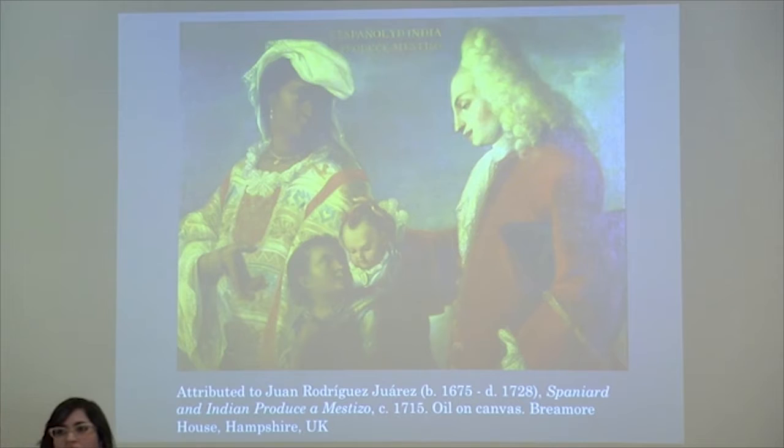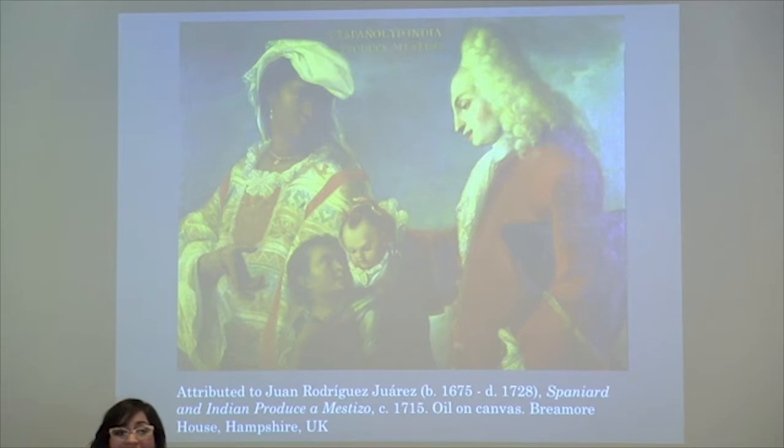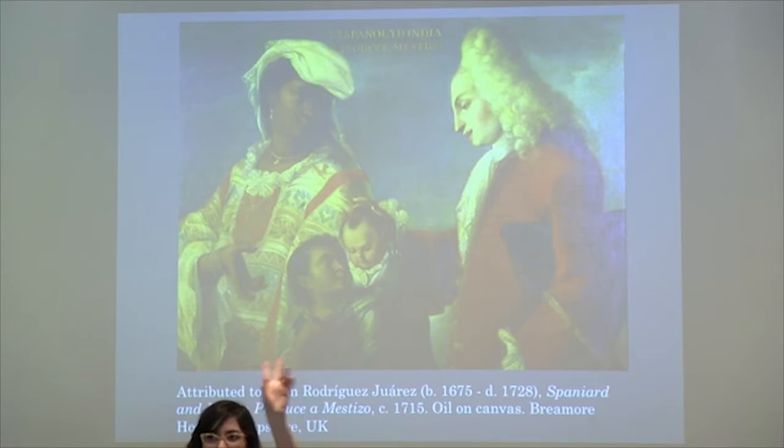One thing you always see in a casta painting is text. Depending on the painter it'll be more or less extensive, but it will always say the mother's race, the father's race, and what the child would be called — what the mixing of those two groups is called. It's kind of pseudoscientific when you think about it.